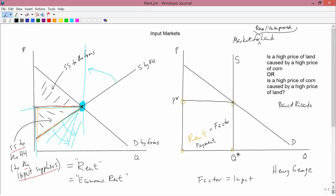And the answer to this question is the high price of land is caused by the high price of corn. And it's not that the high price of corn is caused by a high price of land. The reason is as follows.